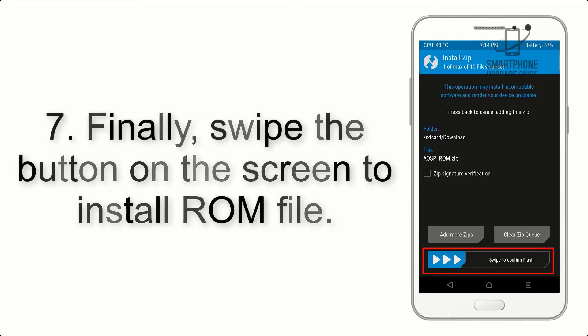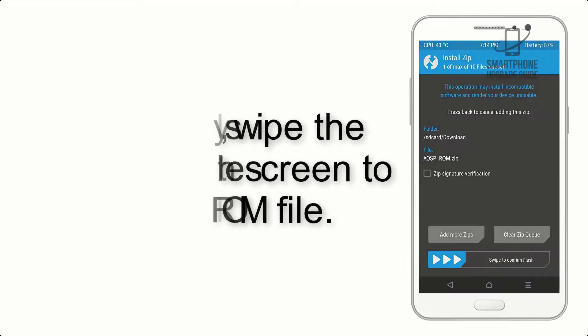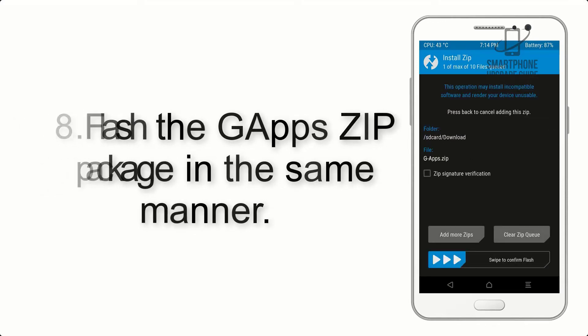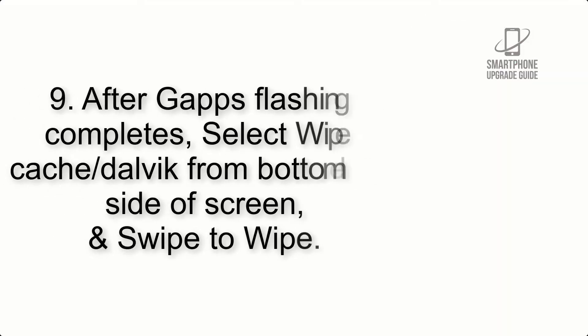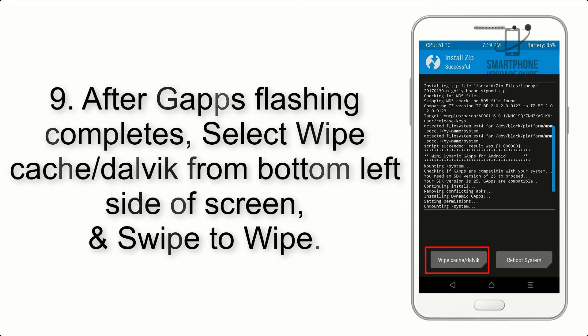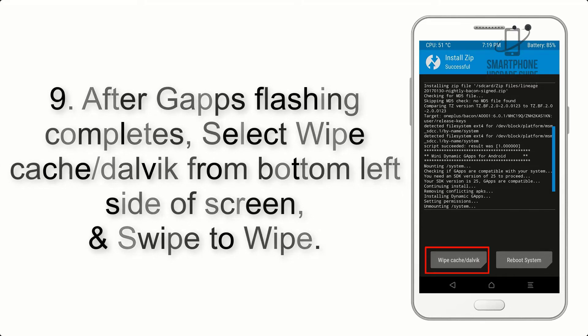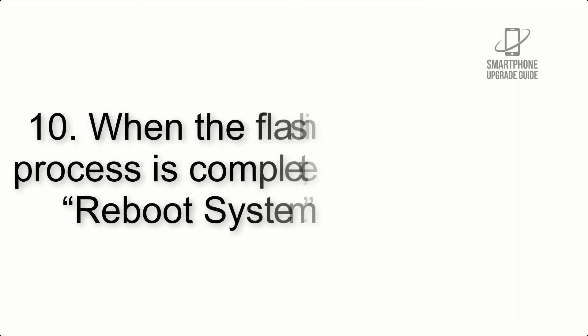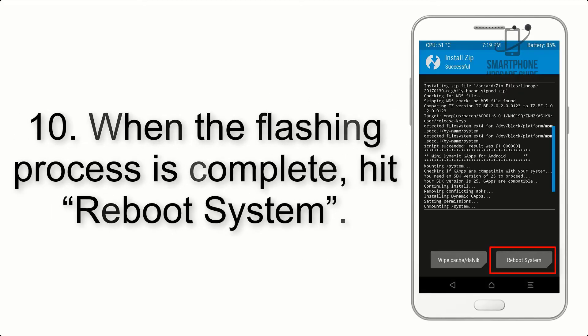Step 7: Swipe the button on the screen to install the ROM file. Step 8: Flash the GApps zip package in the same manner. Step 9: After GApps flashing completes, select Wipe Cache and Dalvik from the bottom left side of the screen and swipe to wipe.